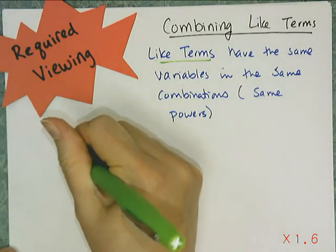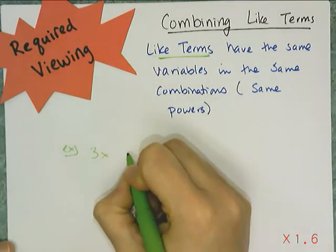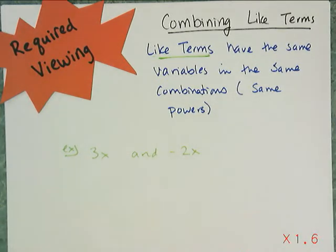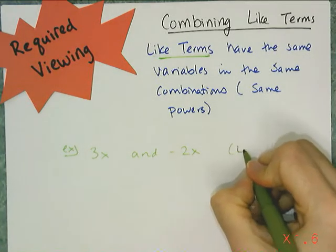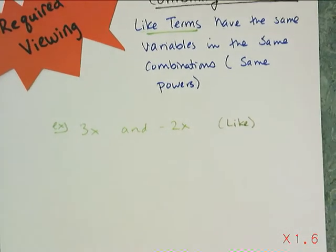Let's look at a couple of examples of things that are like and things that are not like. 3x and negative 2x are considered like terms because they have the exact same variables. They're x's and they're all x's to the first power. So these are like terms and therefore I can add or subtract them and combine them into a single term.